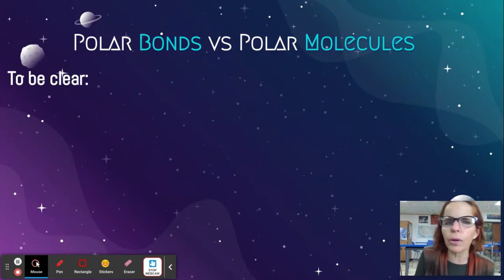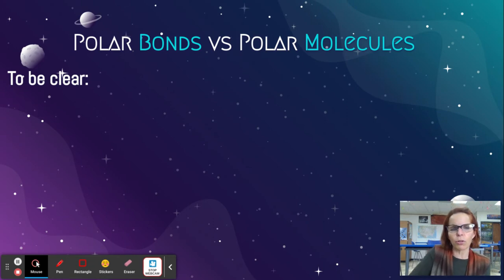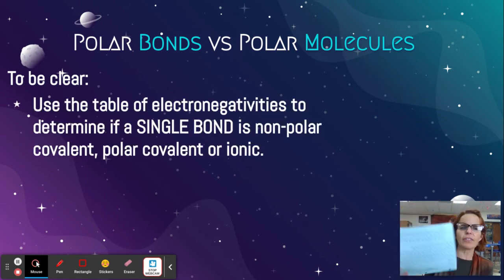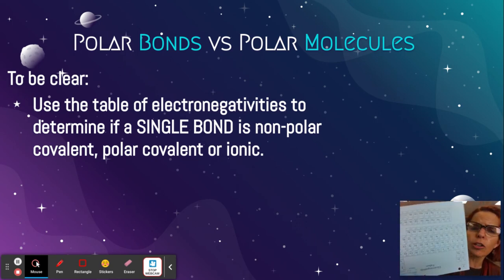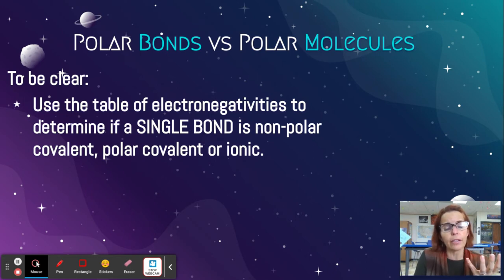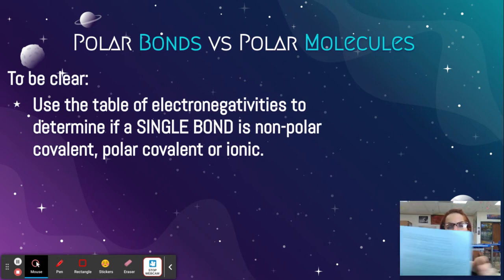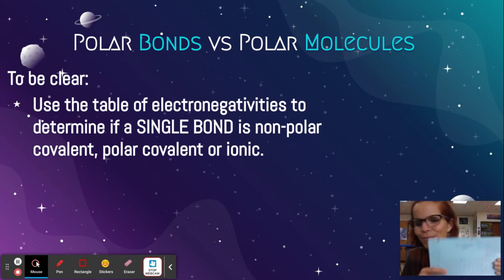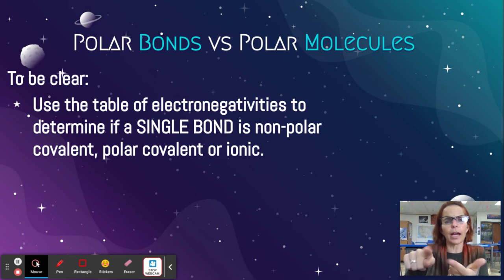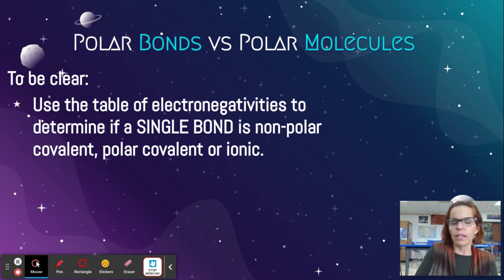To be clear, when we're talking about polar bonds versus polar molecules: you use the table of electronegativities to determine if a single bond is nonpolar, polar, or ionic. You subtract the values and look at this number line — that's how you determine if it's polar, nonpolar, or ionic. Simple.